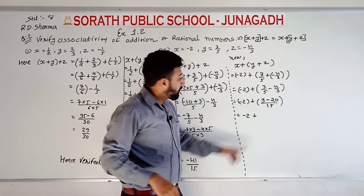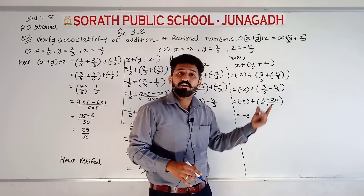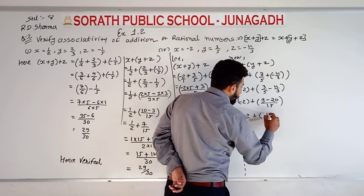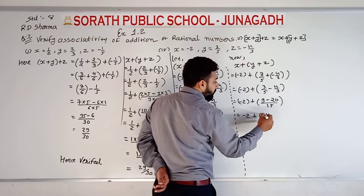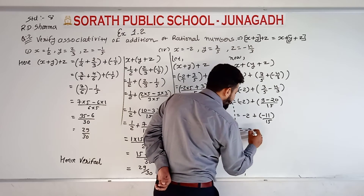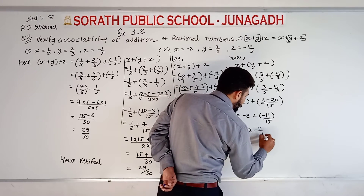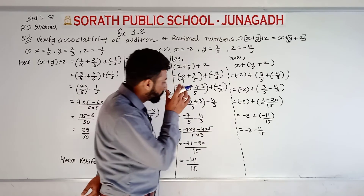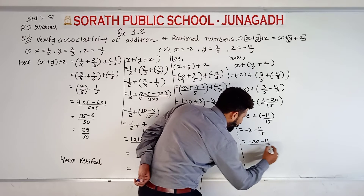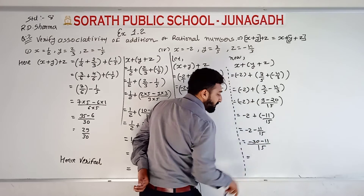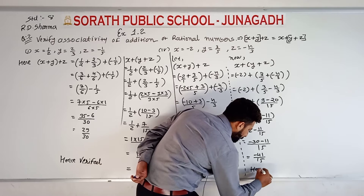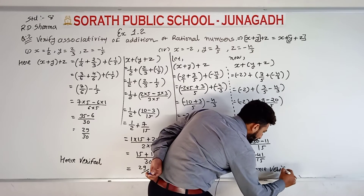Plus: nine is positive and twenty is negative, so opposite signs — we take subtraction. Twenty minus nine becomes eleven, and sign is taken from the bigger value, which is minus. So minus 2, minus eleven upon fifteen. We can take LCM as fifteen: fifteen twos are thirty, minus eleven upon fifteen. Same sign addition: thirty plus eleven, forty-one. So minus 41 upon 15. Verified.